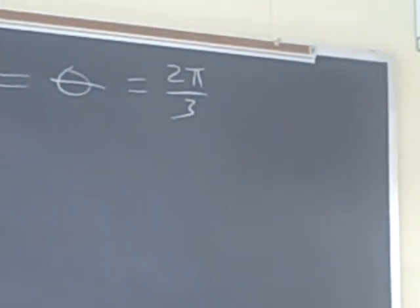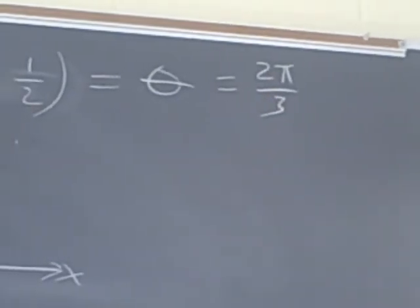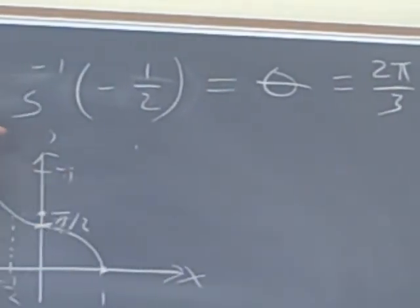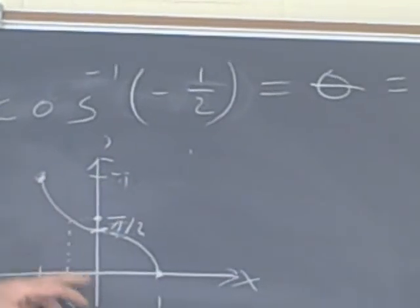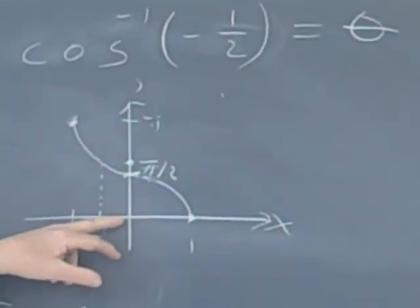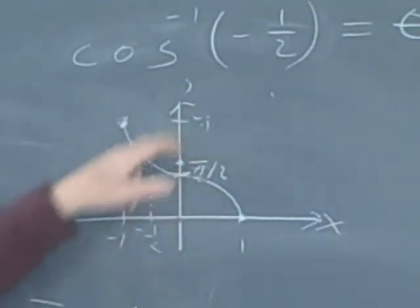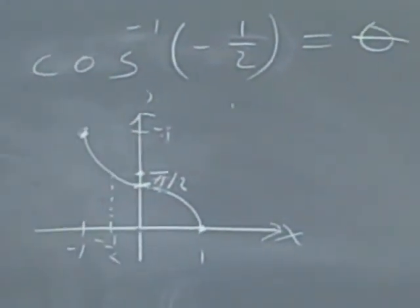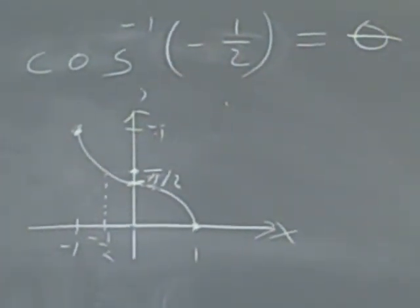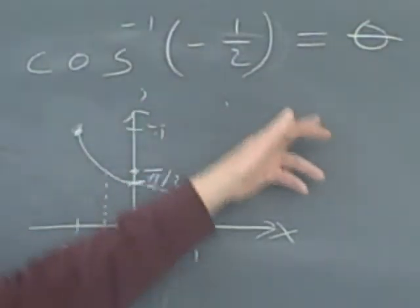Another important thing to remember is these functions only deliver one answer. And they deliver, in this particular case, it can only deliver an answer from 0 to pi and then no other quadrants. So you have to be very, very careful. These are the evaluations your calculator will give you.